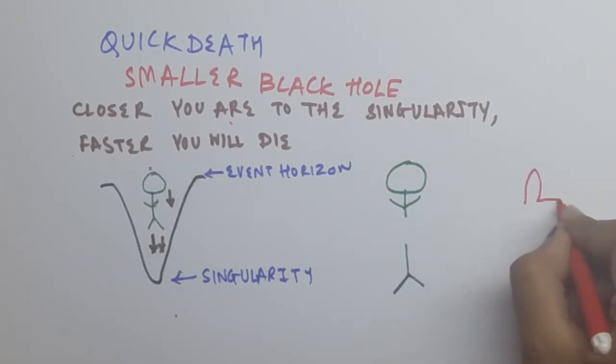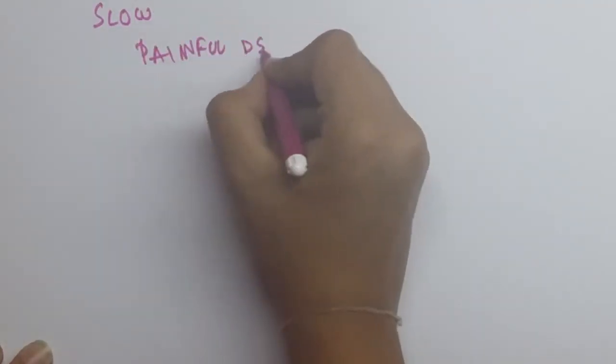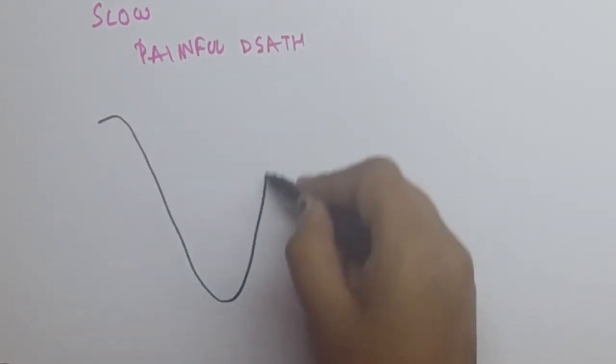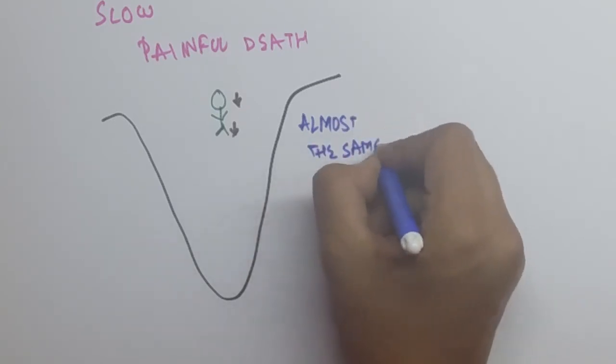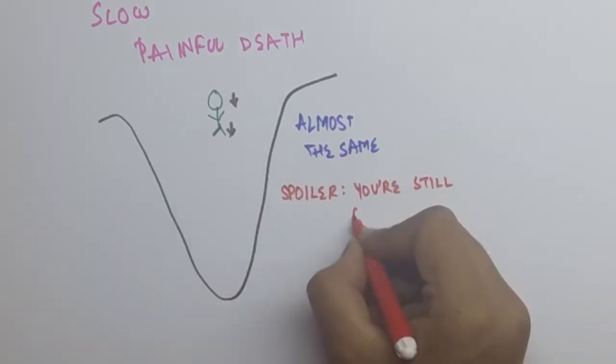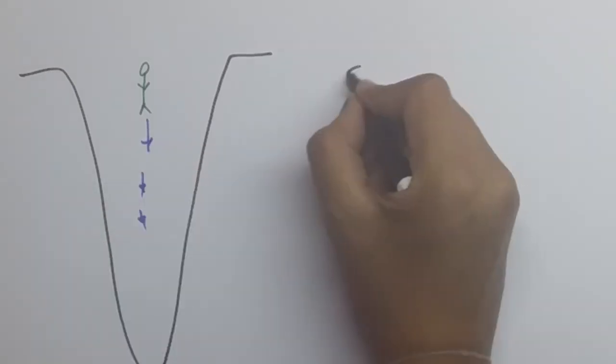You are basically going to split in two. What a great way to go. Say a slow painful death is what you want, then you need a bigger black hole. Here, the gravitational force on your head and legs will be almost the same, but you're not going to survive. When you are falling into this black hole, you will see the universe fast forward in front of your eyes.